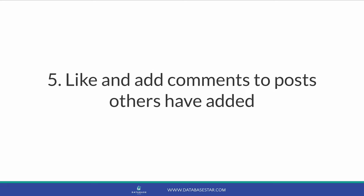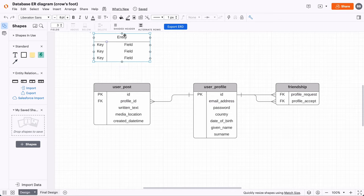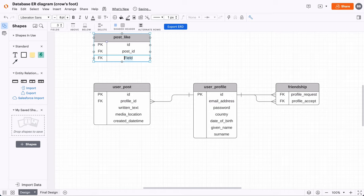The last feature is the ability to like or comment on other posts. A like is an indication that you like a post someone else has put up. We need to store the person who liked it and the post that was liked — a user can do this on many posts but only once per post. So we create a new table to store this: the post_id that was liked, the user_profile_id that liked the post, and a date and time of the like.